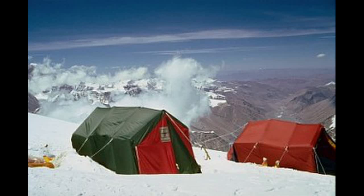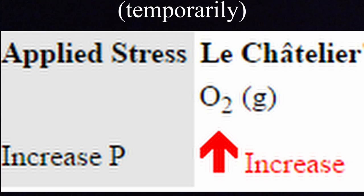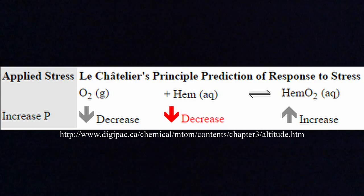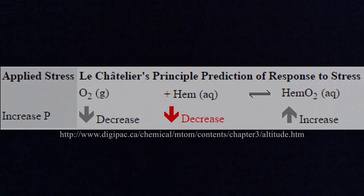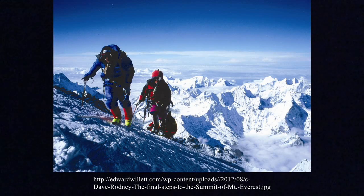According to Digipack, they camp at high altitudes at night in order for their bodies to become used to the lower pressure. This increase in pressure would allow for an increase in the side of the equation with more moles, and increase the amount of oxyhemoglobin. The more oxyhemoglobin will allow them to ascend the mountain higher and higher. This process would be repeated several times until they finally reach the peak.